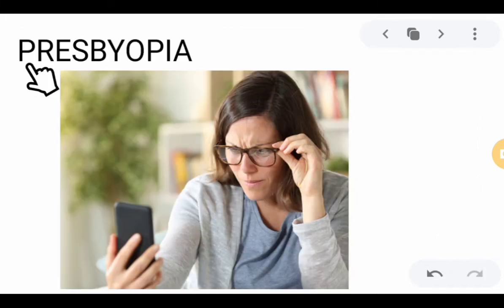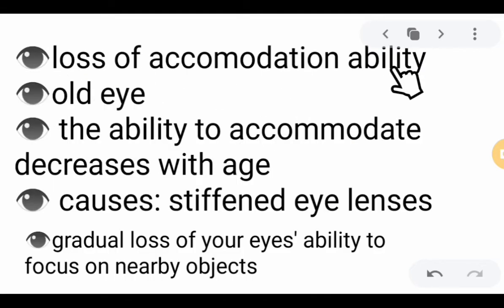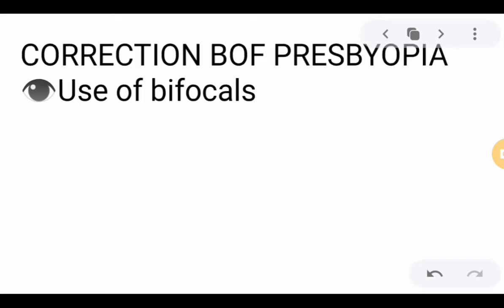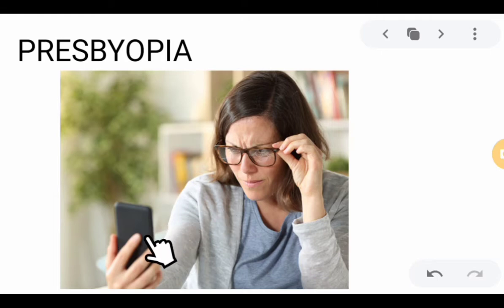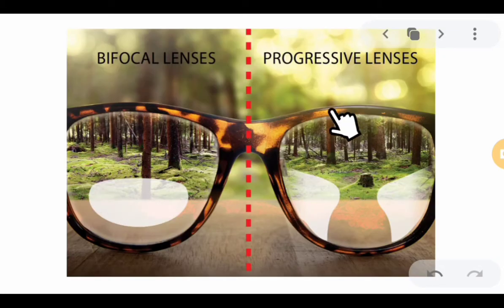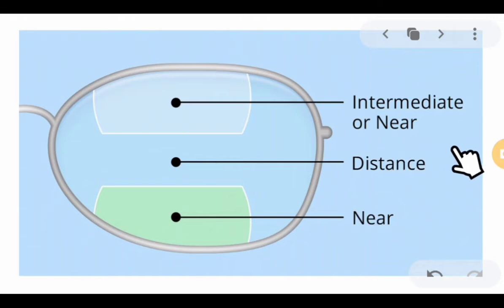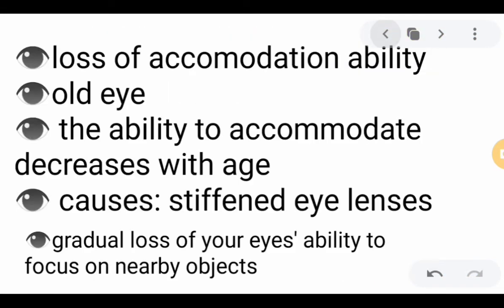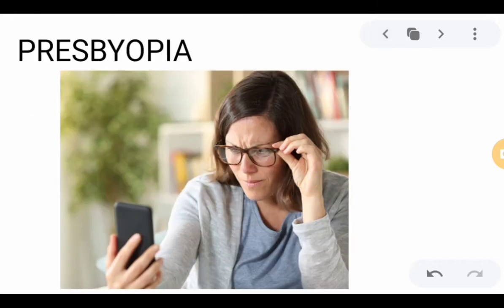The next visual defect is presbyopia — the loss of accommodation ability that usually occurs in aging persons. Presbyopia literally translates to 'old eye,' because the ability to accommodate decreases with age, caused by stiffened eye lenses. This is the gradual loss of the eyes' ability to focus on nearby objects; distant vision is usually not affected. The correction for presbyopia is the use of bifocals or sometimes trifocal lenses, which provide near and intermediate distance focus to sharpen the view of nearby objects.